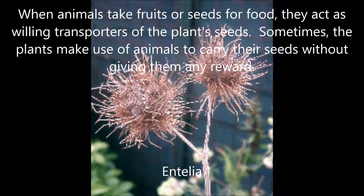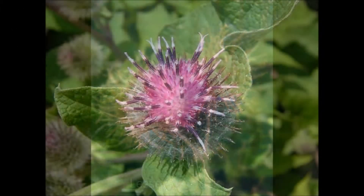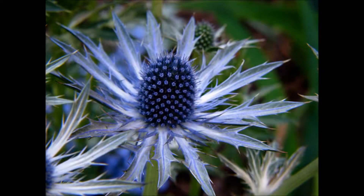Seeds with clinging hooks or spines. When animals take fruits or seeds for food, they act as willing transporters of the plant's seeds. Sometimes the plant makes use of animals to carry their seeds without giving them any reward. Many plants produce fruits or individual seeds covered in hooked spines, which attach the seed to the animal's fur or feathers, or in the case of humans to our clothes or bags. Some examples of seeds spread by this method include Antilia, lesser burdock, and sea holly.